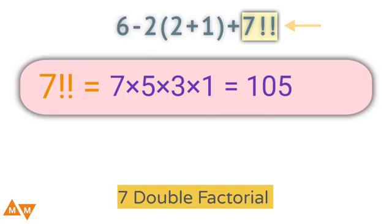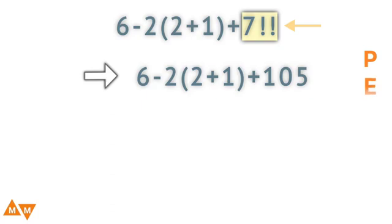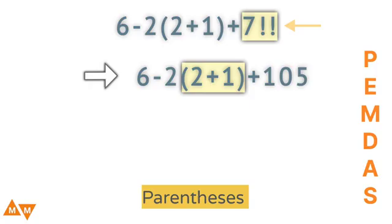Now let's replace this 7 double factorial with 105. The expression becomes 6 minus 2 parentheses 2 plus 1 plus 105. The first thing we're going to do is parentheses. So 2 plus 1 will be our first move, which equals 3.